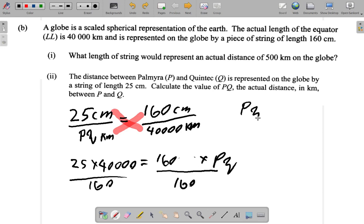What I would get is PQ equal to—switching PQ to the left and putting the numbers on the right—it would be 25 by 40,000 over 160.